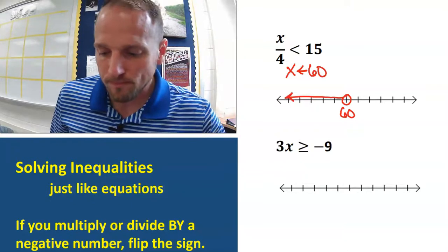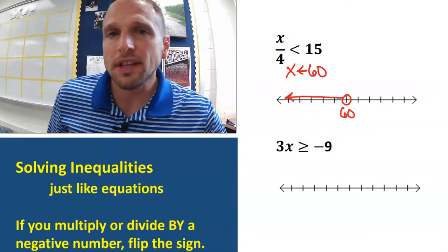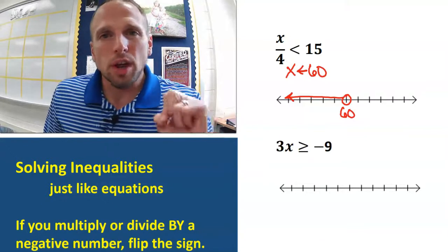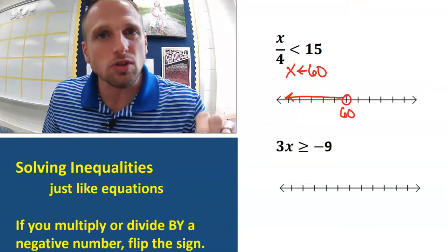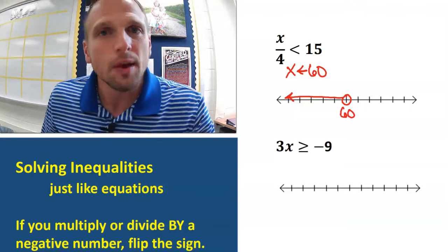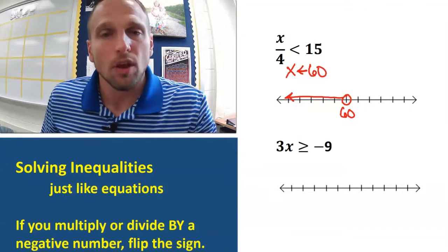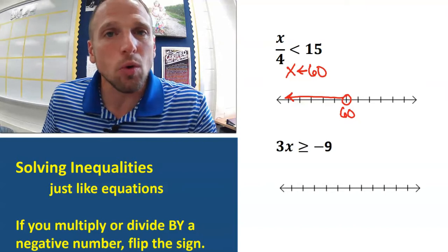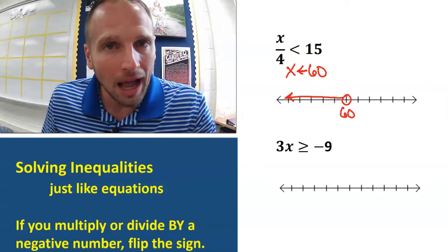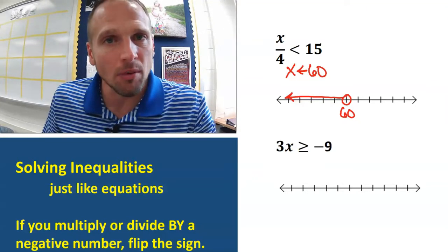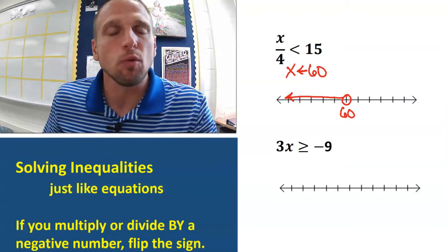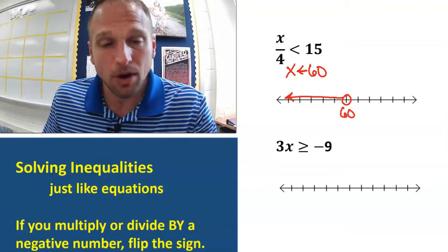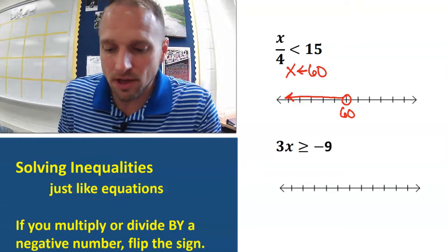Starting with the next problem it gets a little trickier. Equations and inequalities are solved the exact same way with one exception: with an inequality, if you multiply or divide by a negative number, you have to flip the sign. One more time — if you multiply or divide by a negative number, you have to flip the sign.